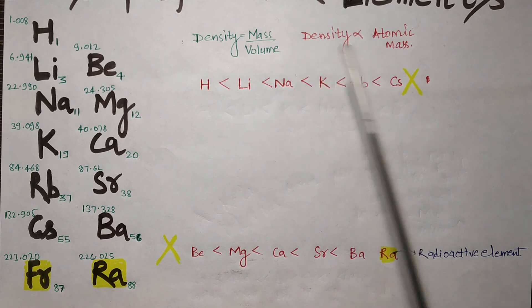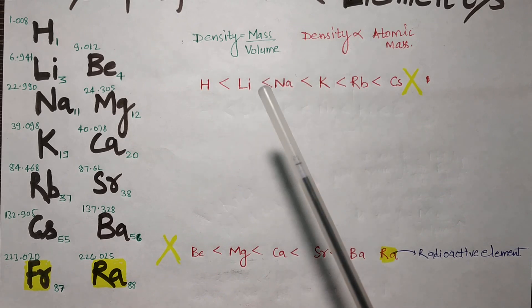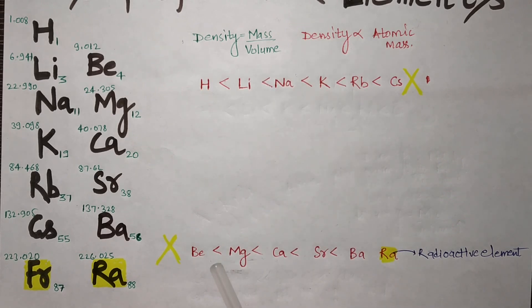As we know, density is directly proportional to atomic mass. Atomic mass increases significantly compared to volume. But is it possible that we are studying inorganic chemistry and there is no exception? Not really. The exception is so significant that the whole trend is rearranged.